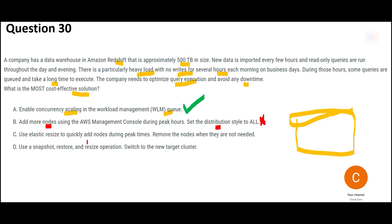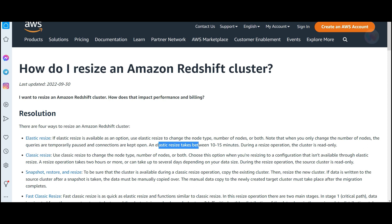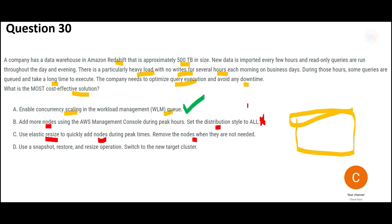Option C says to use Elastic Resize to quickly add nodes during peak time and remove them when not needed. The problem is that Elastic Resize takes 10 to 15 minutes. During the resize operation, the cluster is read-only, which is fine — but for 10 to 15 minutes every morning, queries will remain queued. This is not good enough. Concurrency Scaling in Option A is the better solution.